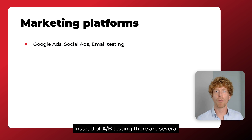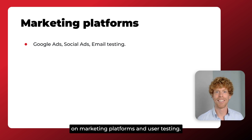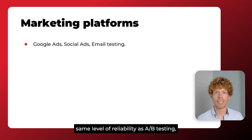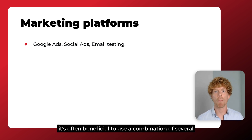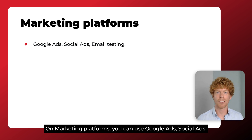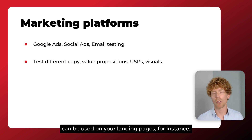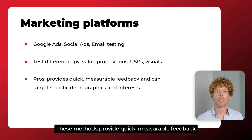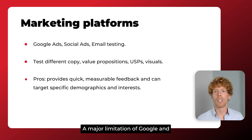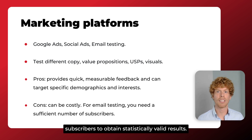Instead of A-B testing, there are several other methods to test your ideas. These methods are related to experimentation on marketing platforms and user testing. Because these methods may not provide the same level of reliability as A-B testing, it is often beneficial to use a combination of several methods to strengthen your validation process. On marketing platforms, you can use Google Ads, Social Ads and Email testing to test different types of copy, value propositions, USPs and visuals. The variations that get the most engagement can be used on your landing pages. These methods provide quick, measurable feedback and can target specific demographics and interests. A major limitation of Google and Social Ads is that they can be costly. For email testing, you need a sufficient number of subscribers to obtain statistically valid results.